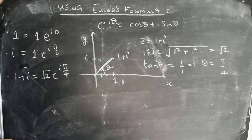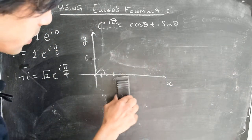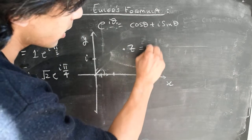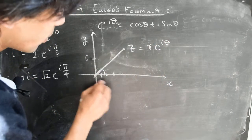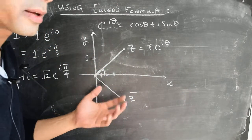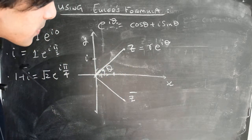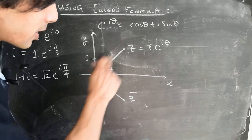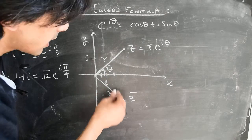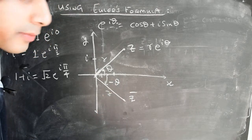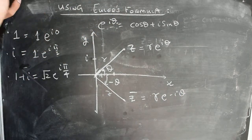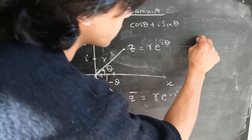Let's consider one more interesting case. Given a complex number z at some point with magnitude r and argument theta, its conjugate z-bar is its mirror image. By convention, we take the counterclockwise direction for the angle to be positive. The magnitude of z-bar equals the magnitude of z, so this vector also has length r, but the angle it makes is theta in the clockwise direction — which is minus theta by our convention. So z-bar can be represented as r·e to the power of minus i·theta.